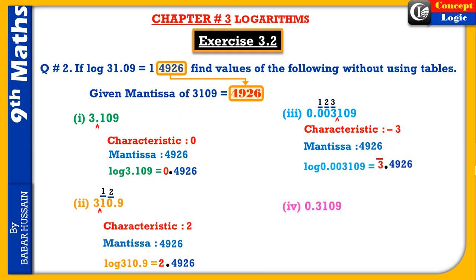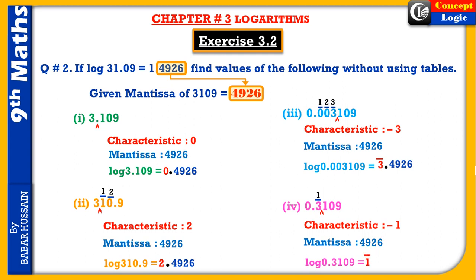Fourth part: 0.3109 — اس میں one digit ہی ہے، مطلب characteristic negative one ہے، کیونکہ decimal left side پر ہے۔ Mantissa fixed ہے: four nine two six۔ پہلے characteristic لکھنا ہے، پھر decimal لگانا ہے، پھر mantissa لکھتے ہیں — اس طرح سے log find کر لیتے ہیں۔